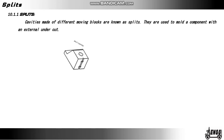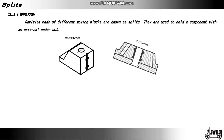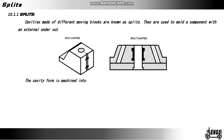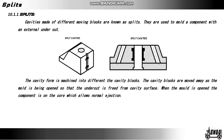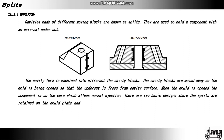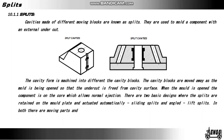Splits: cavities made of different moving blocks are known as splits. They are used to mold a component with an external undercut. The cavity form is machined into different cavity blocks. The cavity blocks are moved away as the mold is being opened so that the undercut is free from the cavity surface. When the mold is open the component is on the core, which allows normal ejection. There are two basic designs where the splits are retained on the mold plate and actuated automatically: sliding splits and angled lift splits.